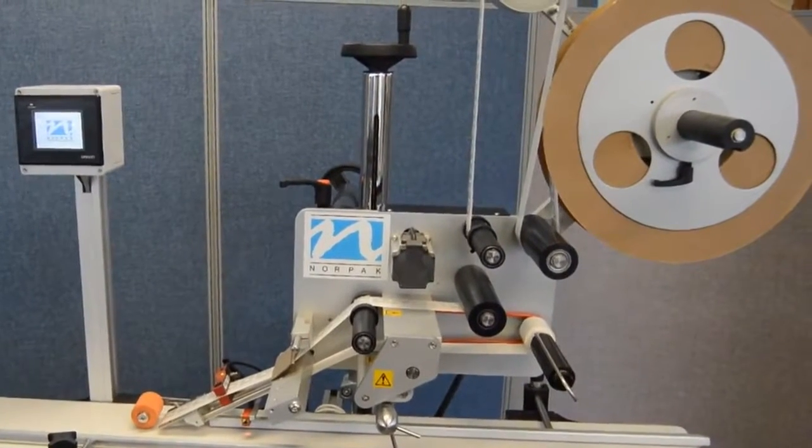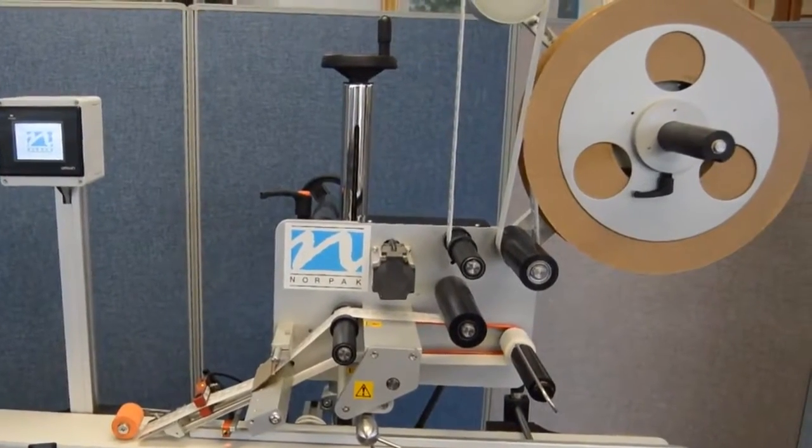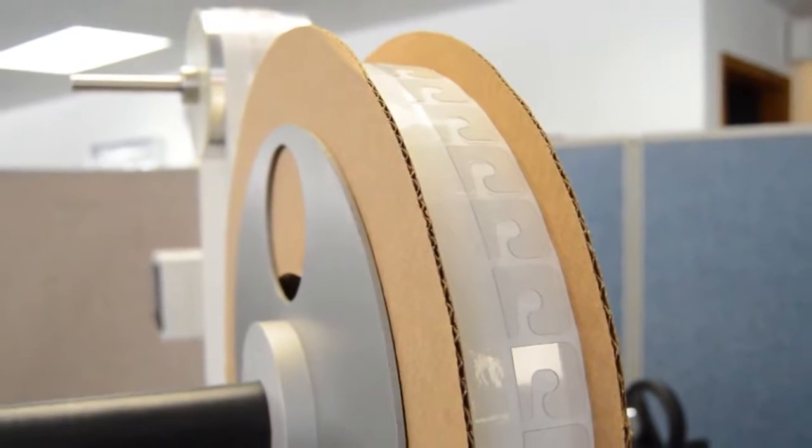Key features of the NORPAC hangtab applicator include a larger unwind to handle rolls up to 15 and a half inches in outer diameter.